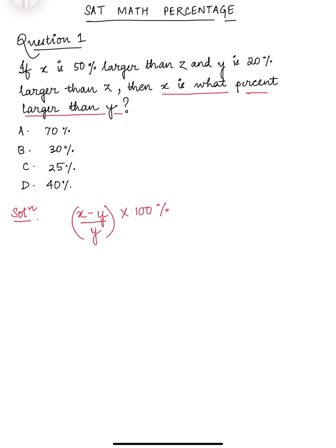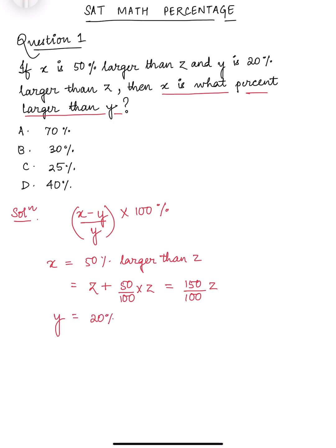Now let's look at the information: x is 50% larger than z, so that essentially means it is z plus 50/100 of z, which is 150/100 of z. And similarly, y is 20% larger than z, so that is z plus 20/100 into z, giving us 120/100 of z.